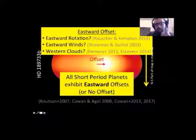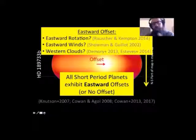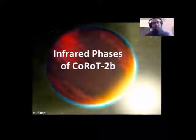Those are our options. The takeaway point is that it doesn't matter why we think these planets have eastward offsets. The point is that all short-period planets exhibit eastward offsets. So far we've looked at ten of them, and all ten have eastward offsets or they have no offset—the error bars are too big and we can't tell. But basically, the wind is blowing to the east or they're rotating to the east, or there's something about the clouds. We always see the hottest points on these planets to the east of the substellar point.